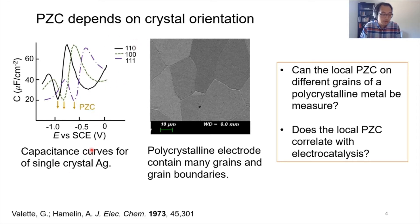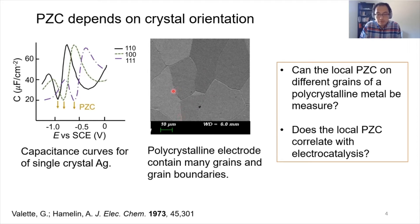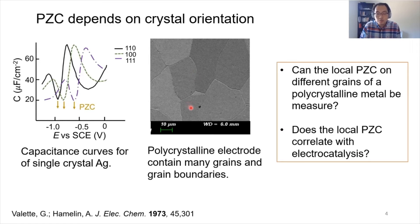However, we often use polycrystalline materials in electrochemistry and electrocatalysis. Because polycrystalline electrodes have many grains on them, and those grains can have very different crystal orientations, it is believed that all those grains will have different local PZC values depending on their local crystal orientation. What we wanted to do here is see if we can actually measure this local potential of zero charge on polycrystalline metals — to see if it correlates back to single crystal measurements — and further, whether this local PZC correlates with electrocatalytic activities.